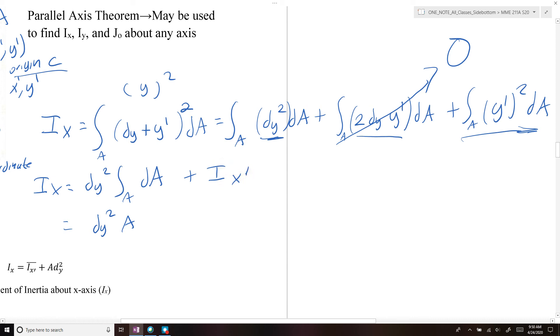So what we end up getting is for Ix about our global axis, we can say it's equal to the distance from the x-axis to the x-prime axis squared times the area plus the moment of inertia about the centroidal axis, Ix-prime.